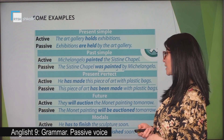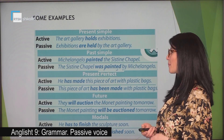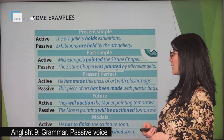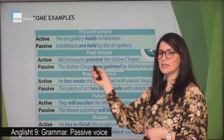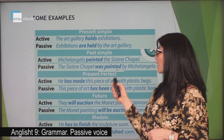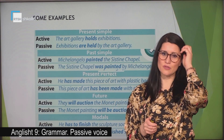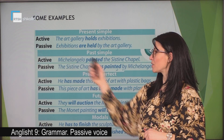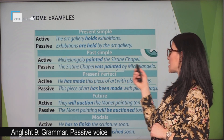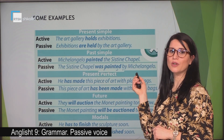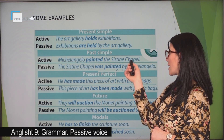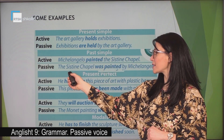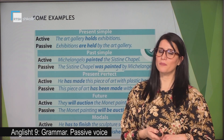Past simple: Michelangelo painted the Sistine Chapel — the Sistine Chapel was painted by Michelangelo. The verb 'painted' is in the past. Have a look at the verb 'to be' — it is transformed into 'was'. The subject in the active sentence is transformed into the object of the passive sentence, and the object of the active sentence has become the subject of the passive sentence.